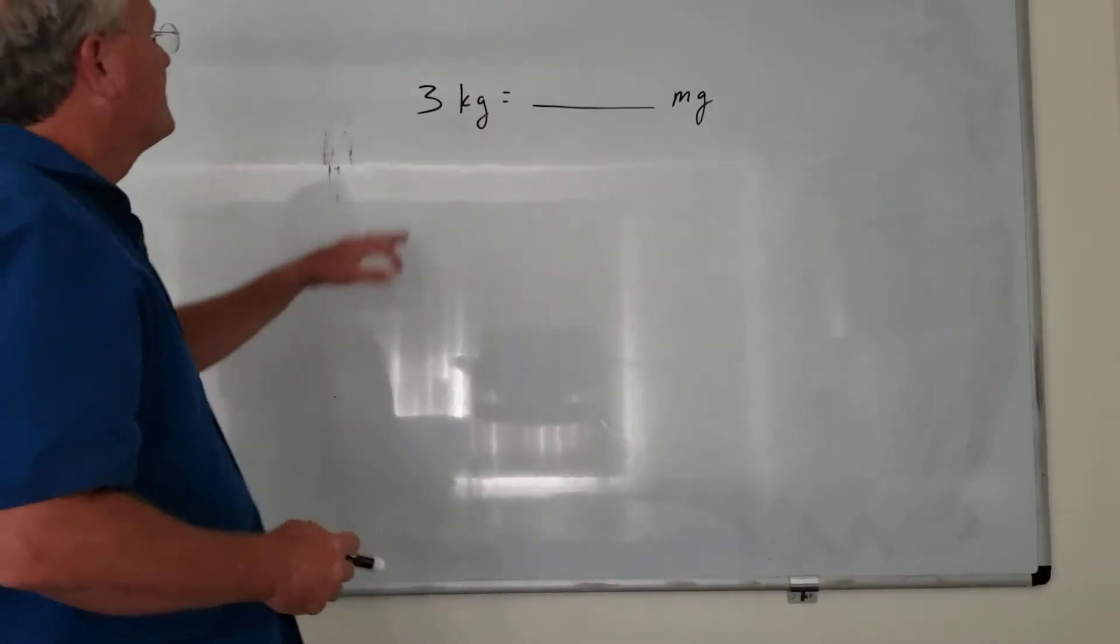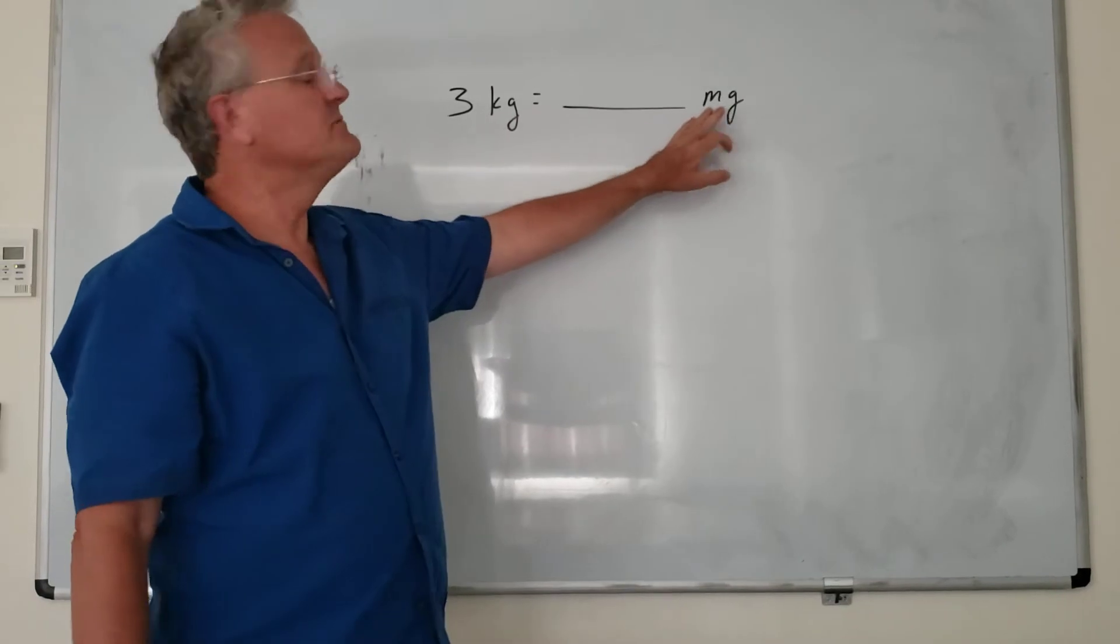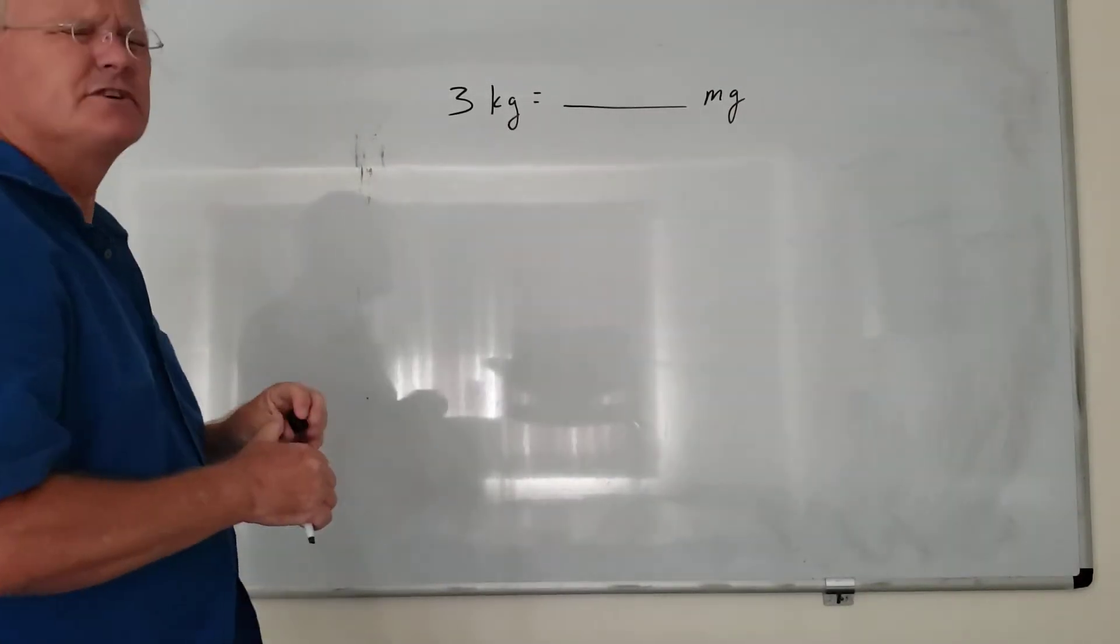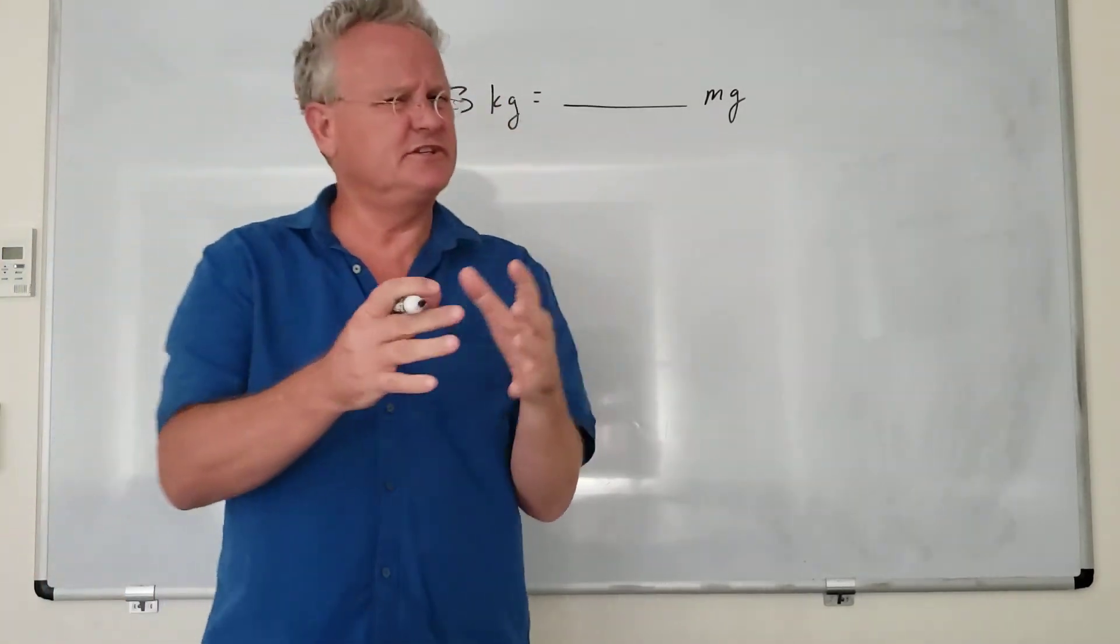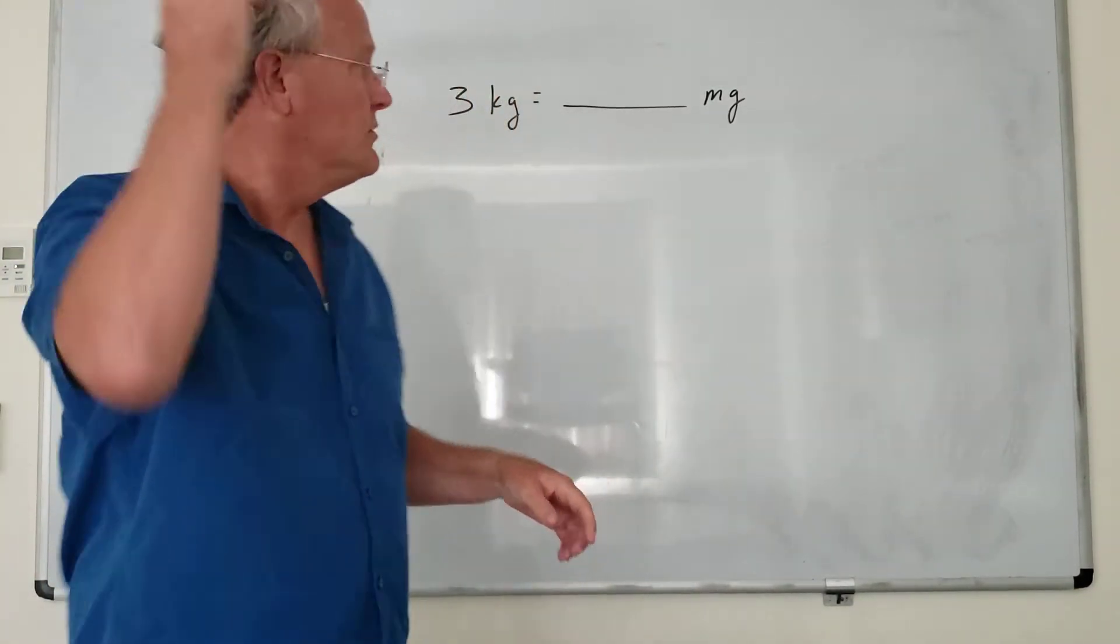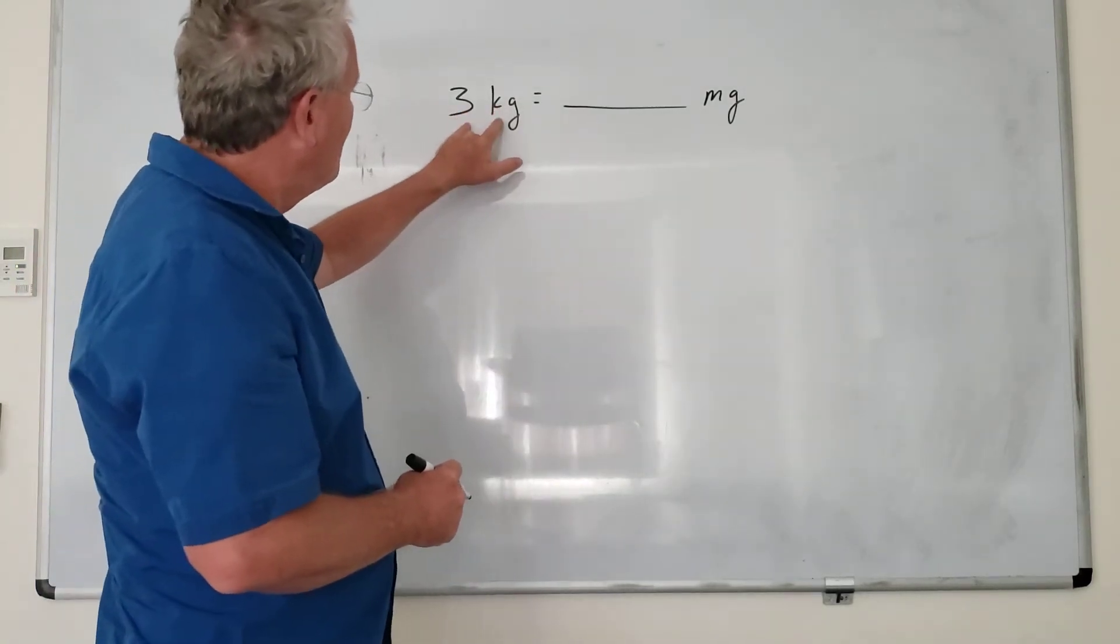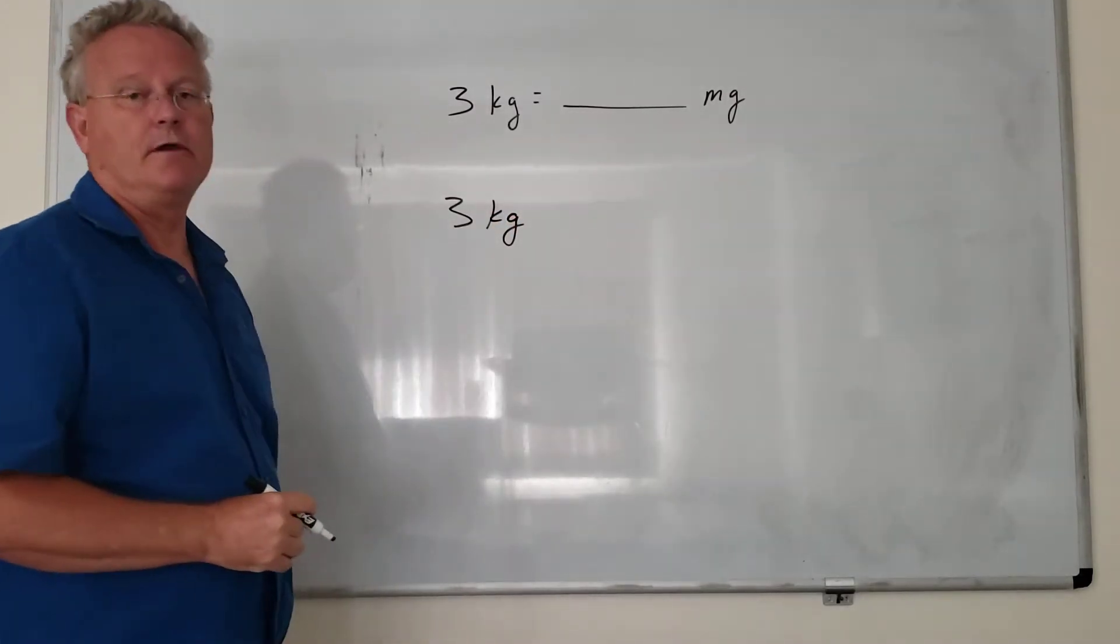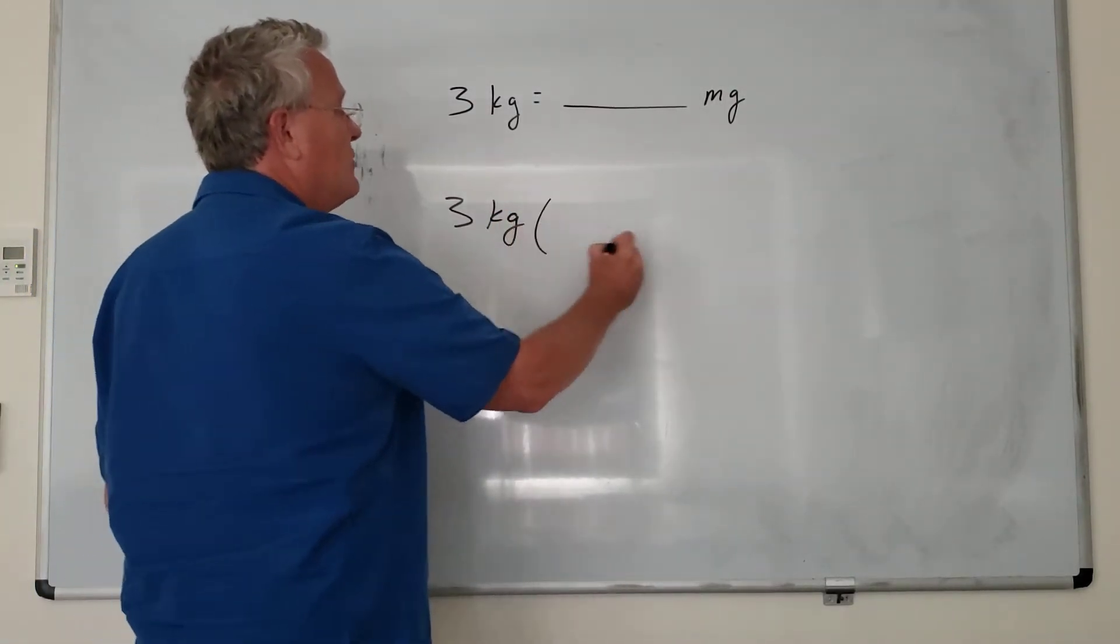All right, so in this example we're asked to convert three kilograms to milligrams. To do this, it's pretty much the same process every time. What do we do? Step one, whatever is on the left side, we just write that down. The next step, we want to convert to your basic unit.